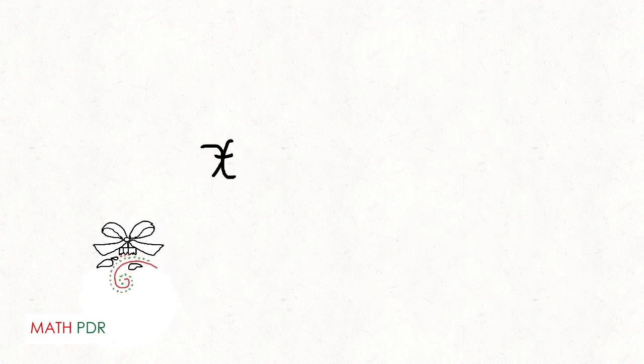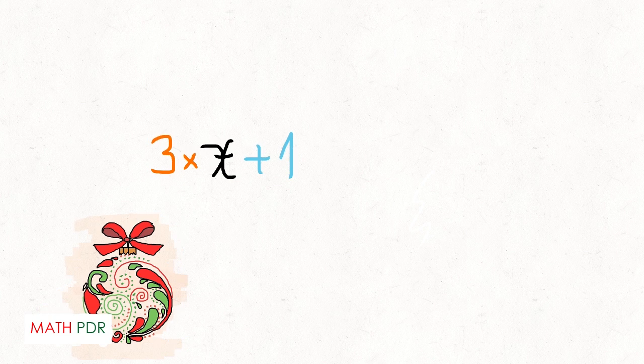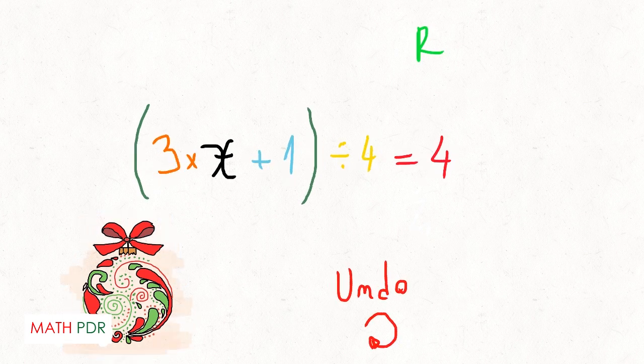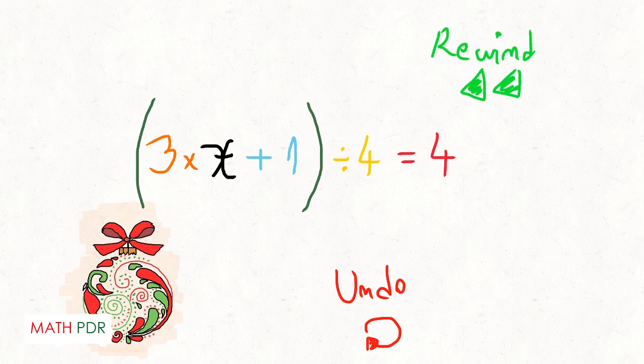An equation is basically a search for X, which has been wrapped in a series of numbers and operations. To get to X you have to correctly remove all the numbers. This is done by undoing all the operations in the reverse order in which they were applied.